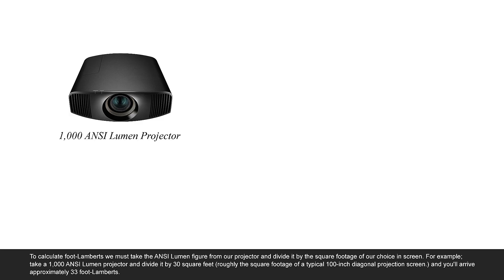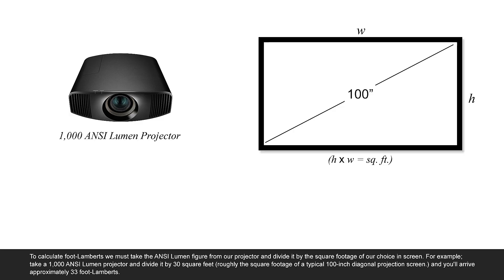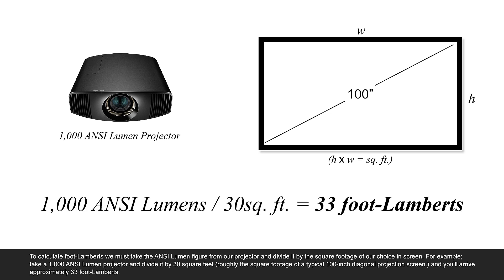To calculate foot lamberts, we must take the ANSI lumen figure from our projector and divide it by the square footage of our chosen screen. For example, take a 1,000 ANSI lumen projector and divide it by 30 square feet — roughly the square footage of a typical 100-inch diagonal projection screen — and you will arrive at approximately 33 foot lamberts.